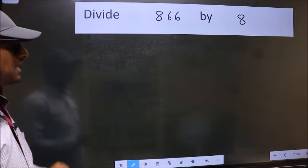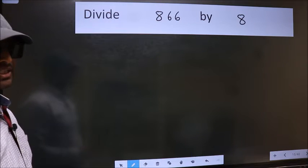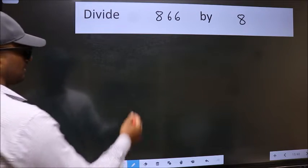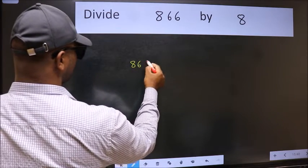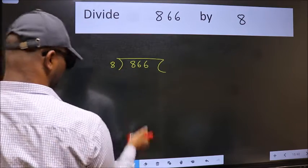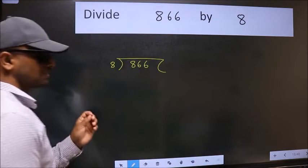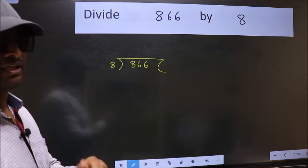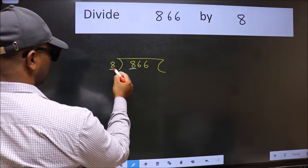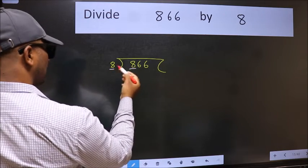Divide 866 by 8. To do this division, we should frame it in this way: 866 here and 8 here. This is step one. Next, here we have 8 and here 8. When do we get 8 in the 8 table?